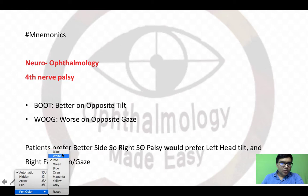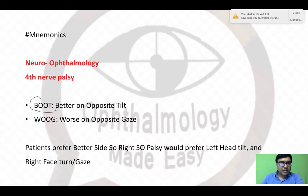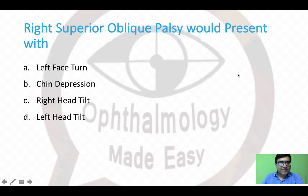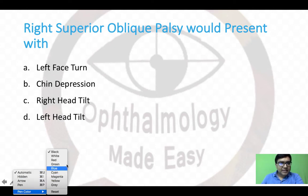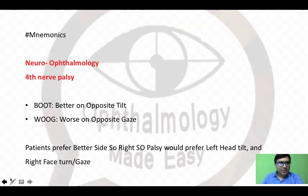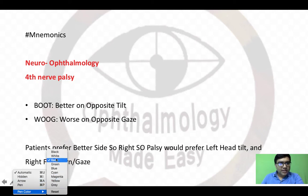To remember this, use the mnemonic BOOT and VOOG. BOOT stands for 'better on opposite tilt.' So if you have left superior oblique palsy, the left side would present with right head tilt, and vice versa. For right superior oblique palsy, your answer would be D, that is left head tilt.